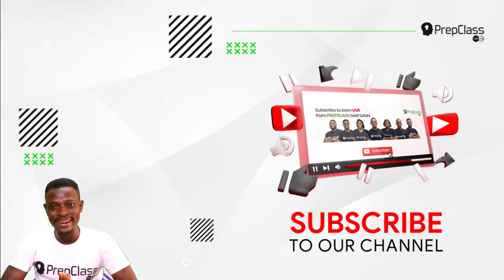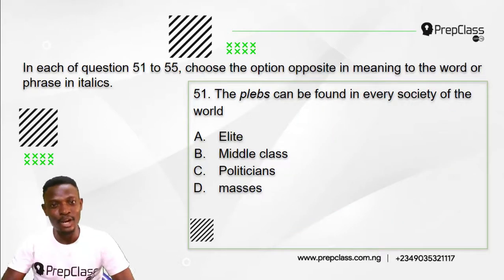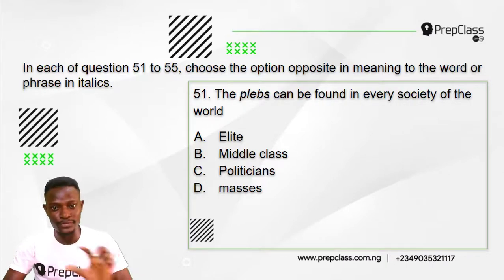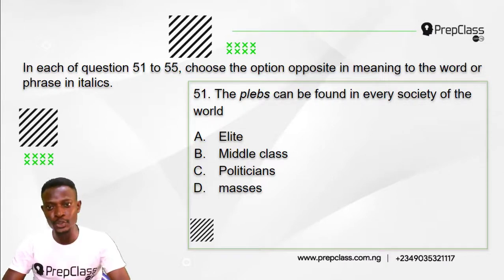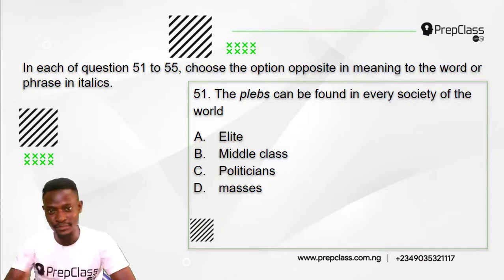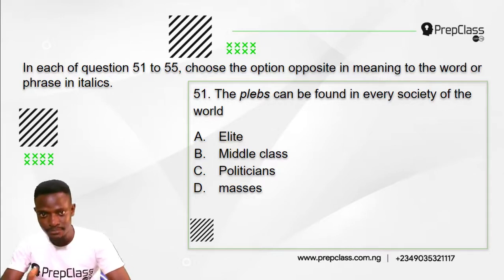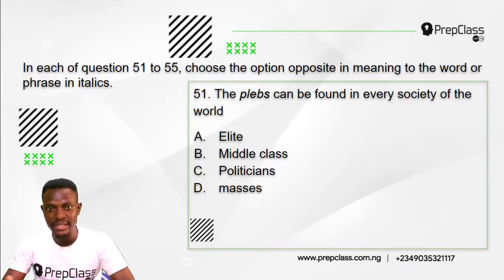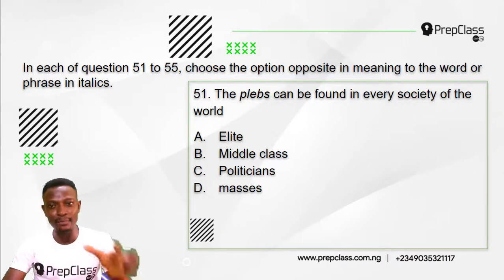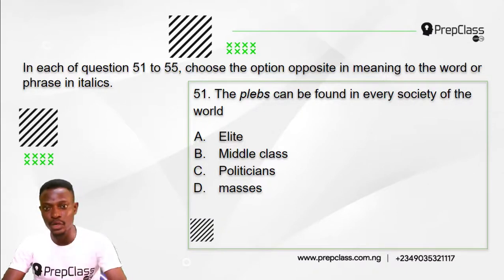Let's begin. For questions 51 to 55, the instruction reads: in each of the questions 51 to 55, choose the option opposite in meaning to the word or phrase in italics. Question 51 reads: the plebs can be found in every society of the world. The word in italics here is 'plebs.'